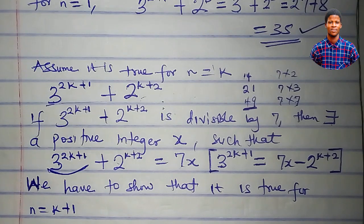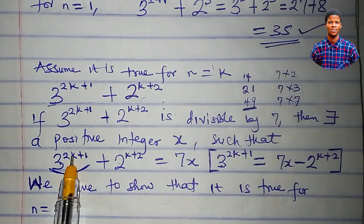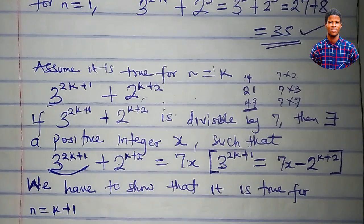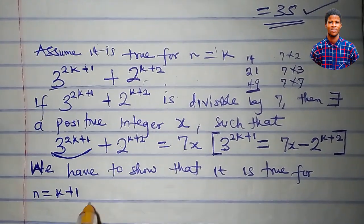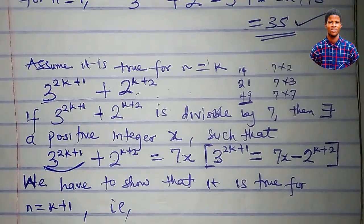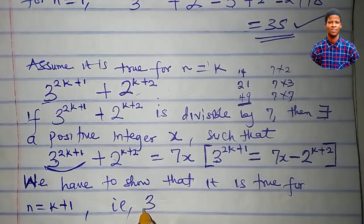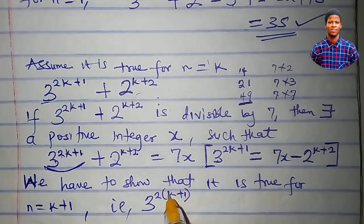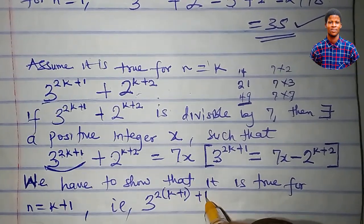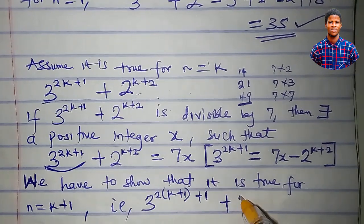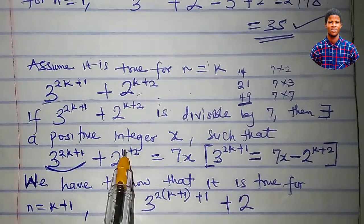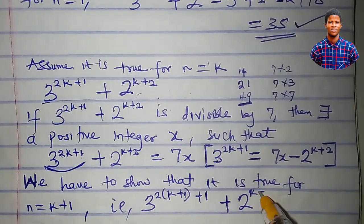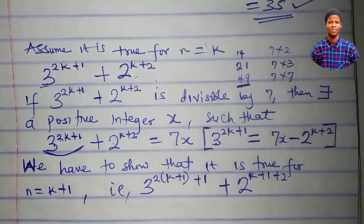We now have to show it is true for n equal to k plus 1. In place of k, we write k plus 1, so the expression becomes 3 to the power of 2 times (k plus 1) plus 1, plus 2 to the power of (k plus 1) plus 2. That simplifies to 3^(2k+3) + 2^(k+3).